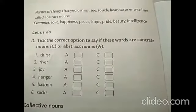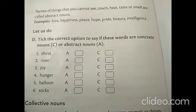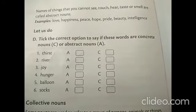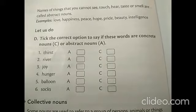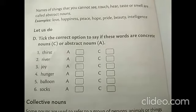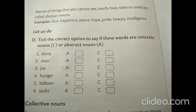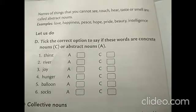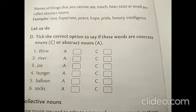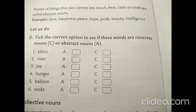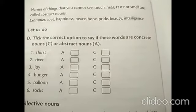Now we can go to the abstract nouns. What are abstract nouns? Nouns of things that you cannot see, touch, hear, taste, or smell are called as abstract nouns. Here the five senses do not come — it does not include the five senses. But abstract nouns mostly consist of feelings, feelings that cannot be expressed.